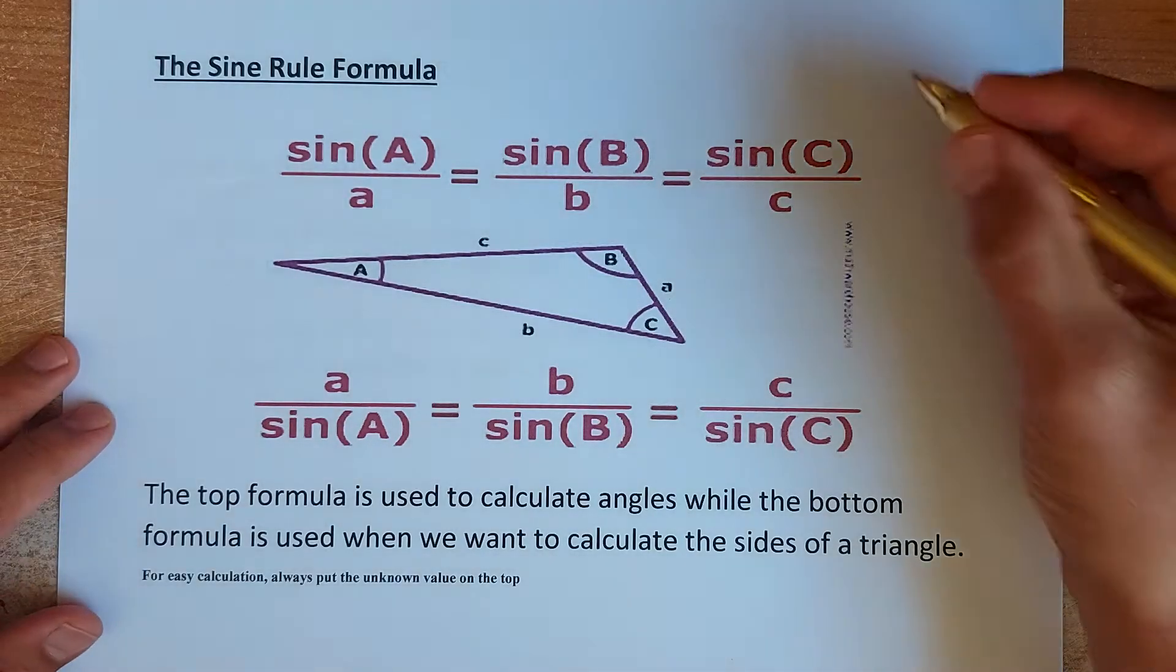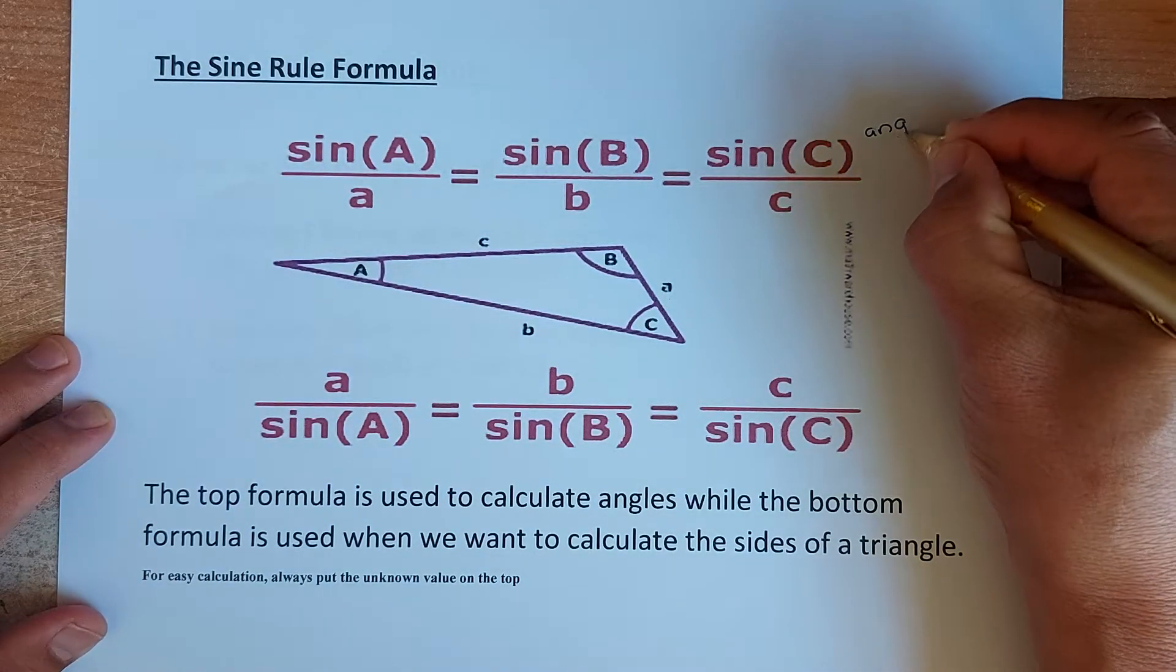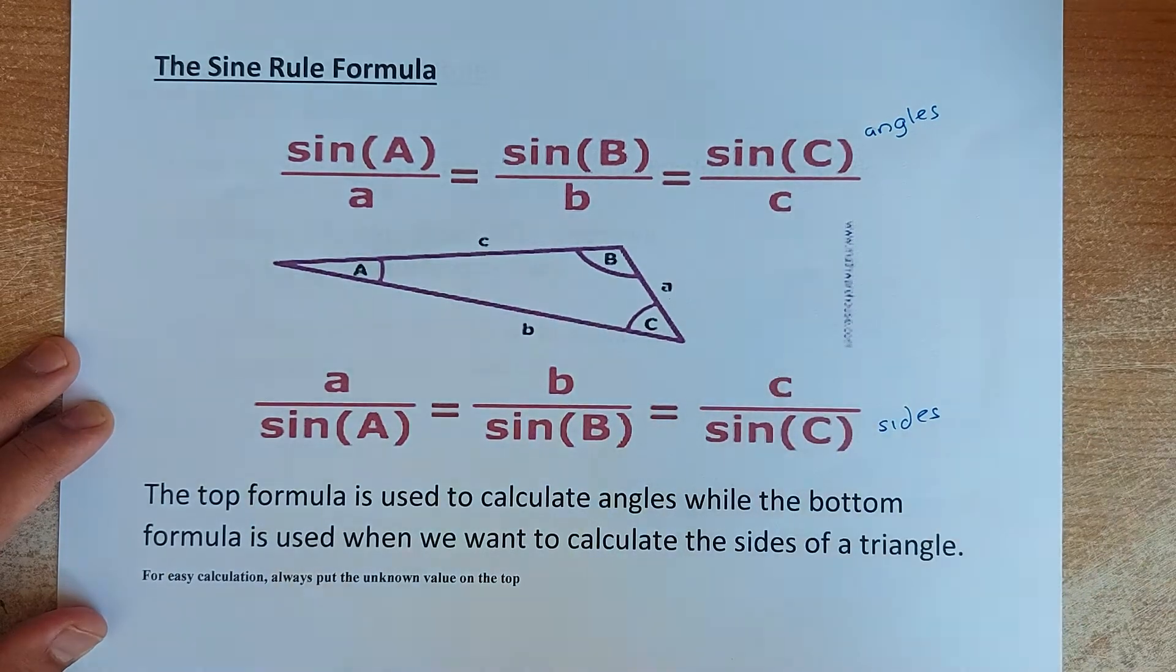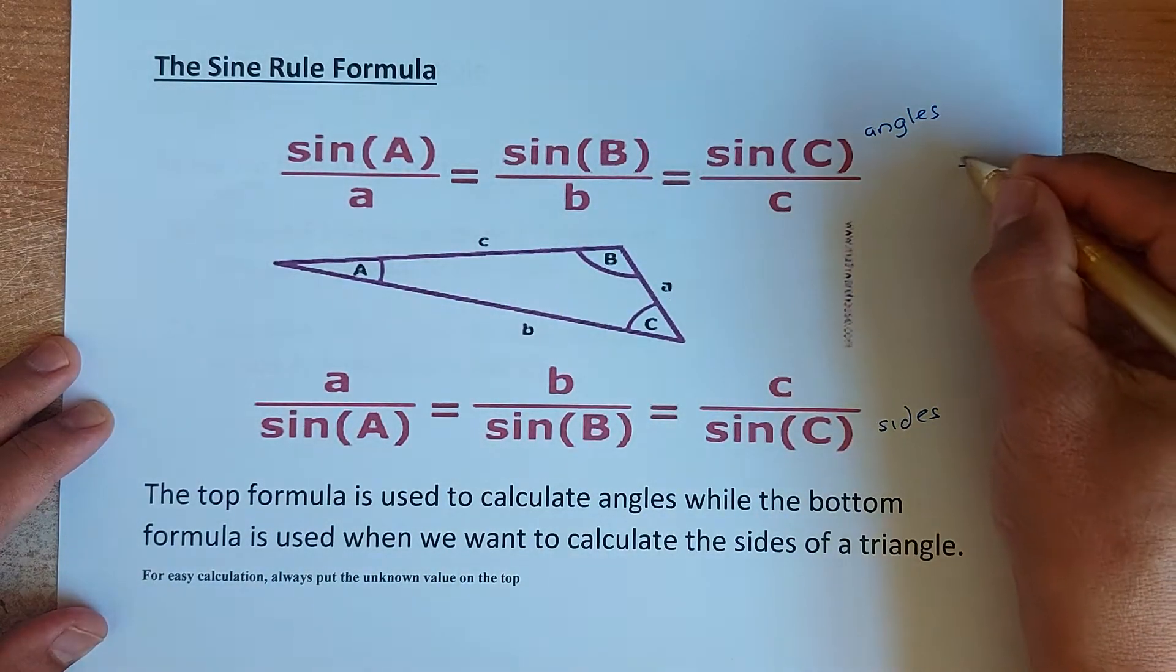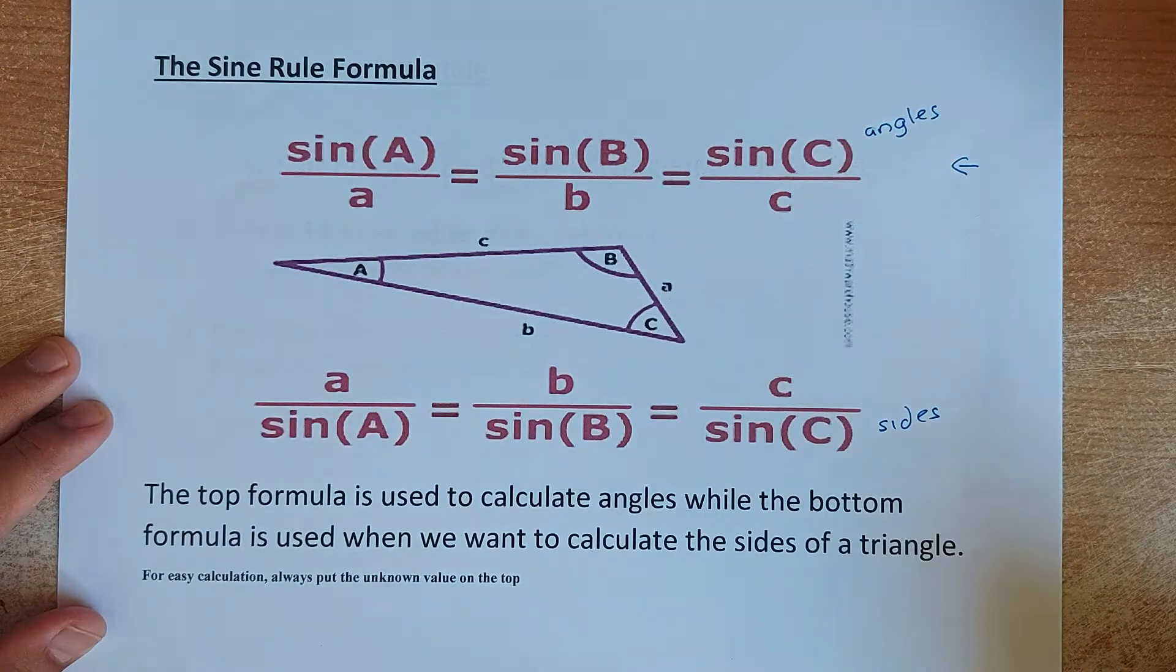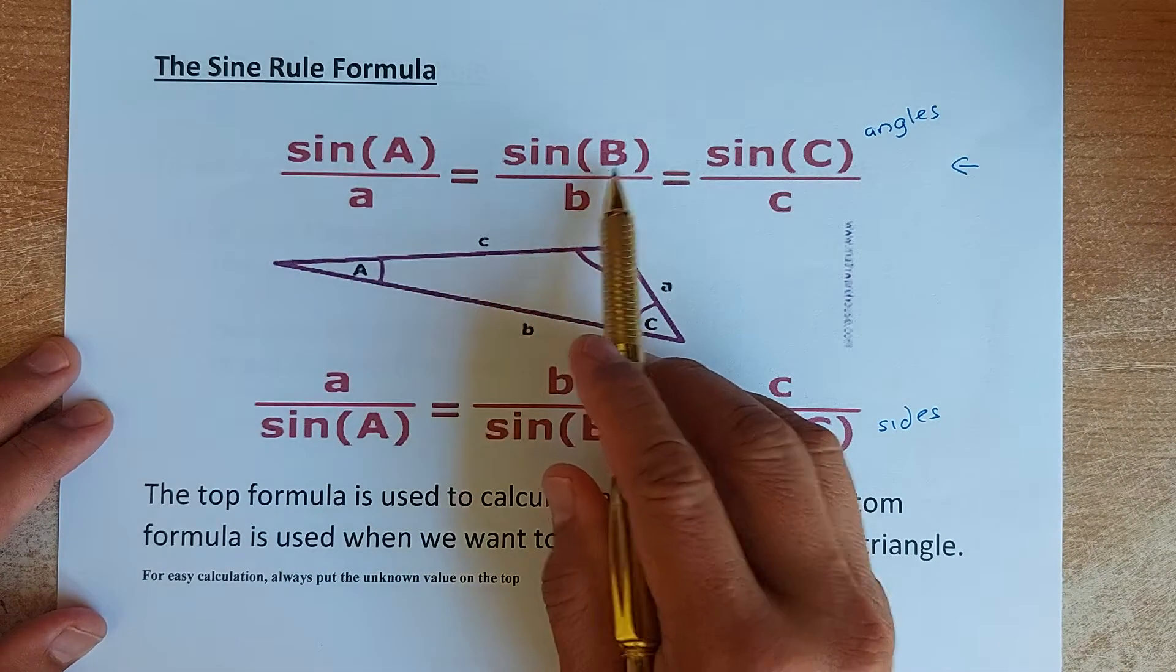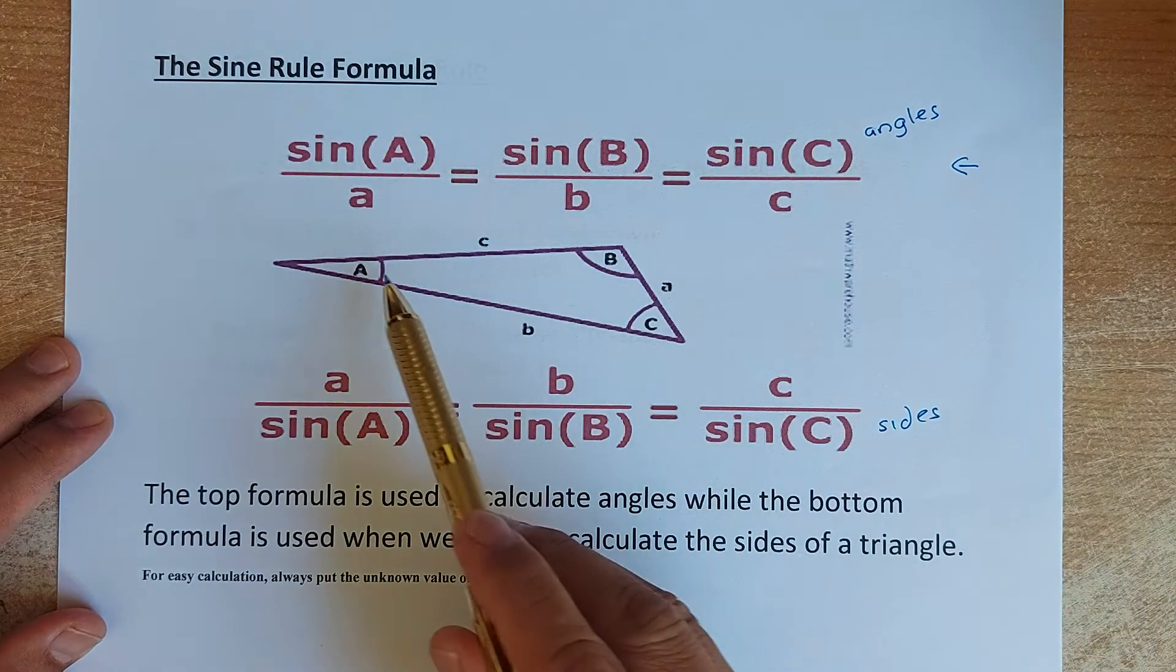As I said before, the top formula is for the angles and the bottom formula is for the sides. So in this case, in this video, we shall be using this formula instead of the one at the bottom. So remember, capital A, B, and C, they represent the angles.